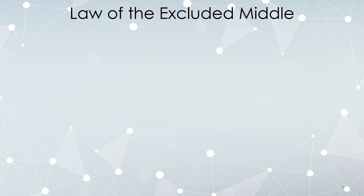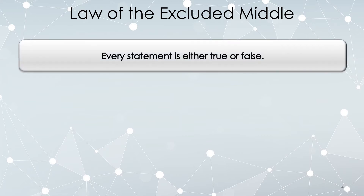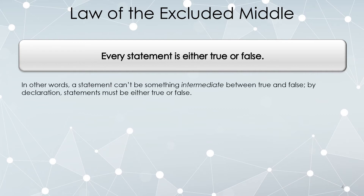The second fundamental law regarding statements is called the law of the excluded middle, and this says that a statement must be either true or false. This is really baked into the definition we said at the beginning — a statement is a thing which is either true or false. So we can't have something in between. Intuitively we may want to say things like 'this is sometimes true' or 'this is sort of true,' but a statement must either be true or false. There is no intermediate value between the two.